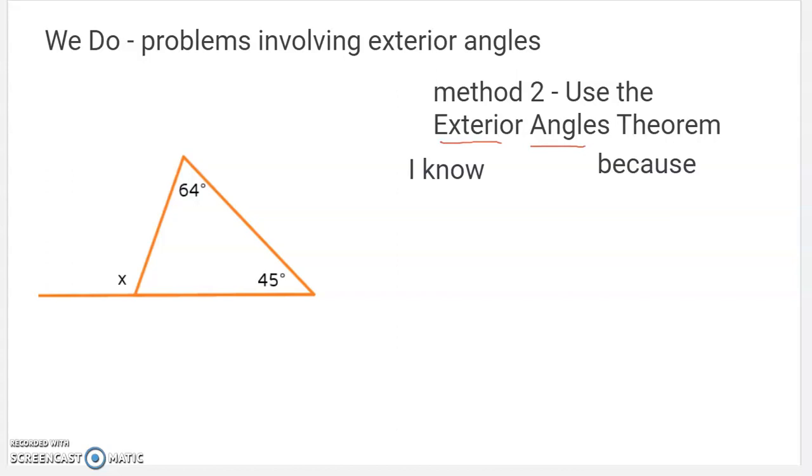We can use the exterior angles theorem and know very quickly in one step, x equals 64 plus 45. Because of that exact reason, the exterior angles theorem. If we did these steps, we would get the same thing either way. These two numbers, if you add them together, are going to add up to x is what that said. Because what we would end up doing the other way is we would add those up to 180 and then add these up to 180. You're really doing the exact same thing two different times, and you'll get the same thing. So major shortcut if you know that exterior angles theorem, you can cut this problem in one step.